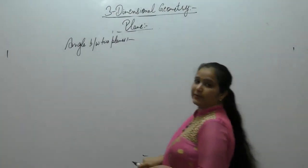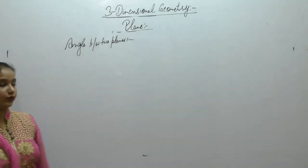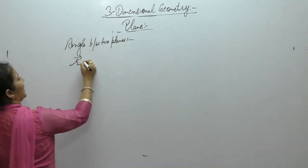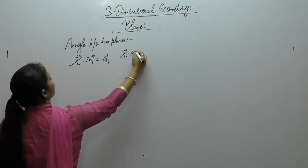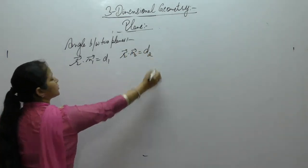Now next is angle between two planes. If we have two planes, r.n1 vector is equal to d1, r.n2 vector is equal to d2.